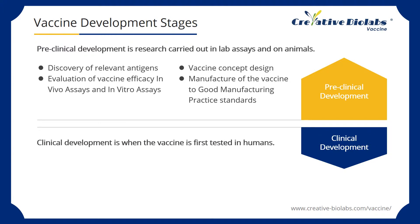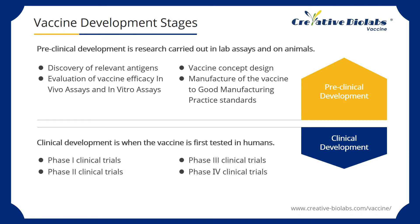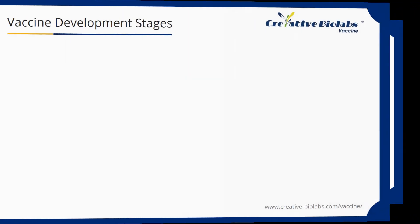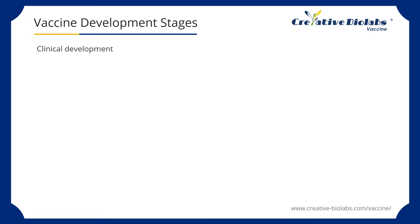Clinical development is when the vaccine is first tested in humans. It covers four stages over several years, from initial clinical trials in humans Phase 1 right through to post-marketing Phase 4. Clinical development is built on rigorous ethical principles of informed consent from volunteers, with an emphasis on vaccine safety as well as efficacy. After being thoroughly tested in an animal model, vaccine candidates that are found to be safe and induce immunity can advance to testing in humans.